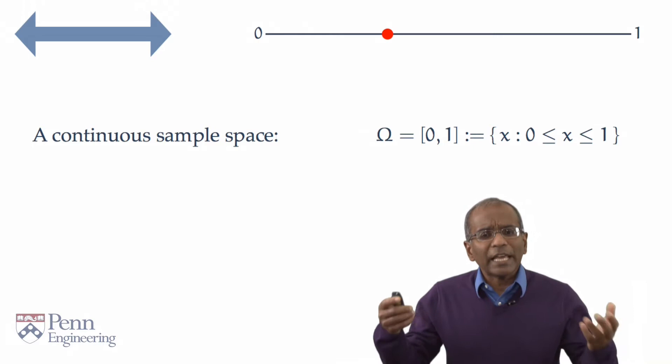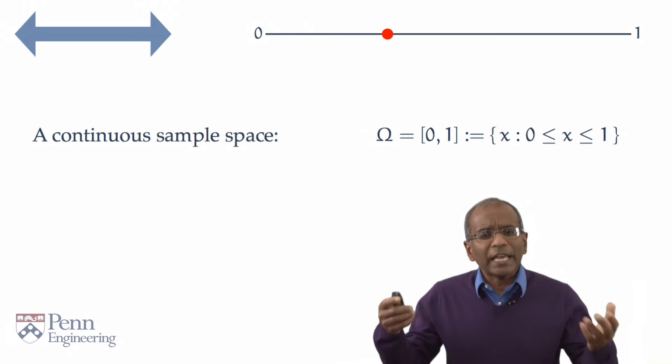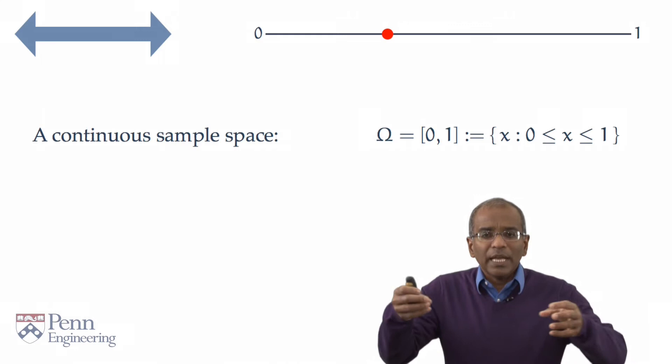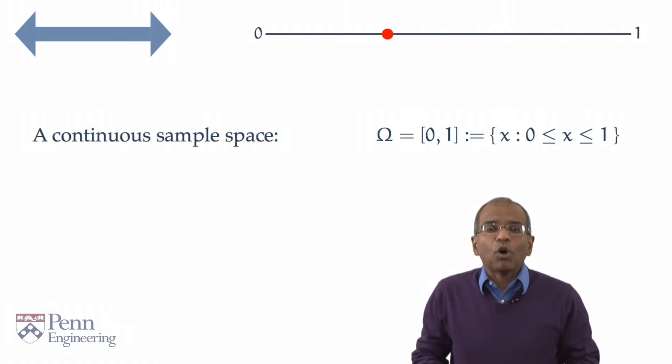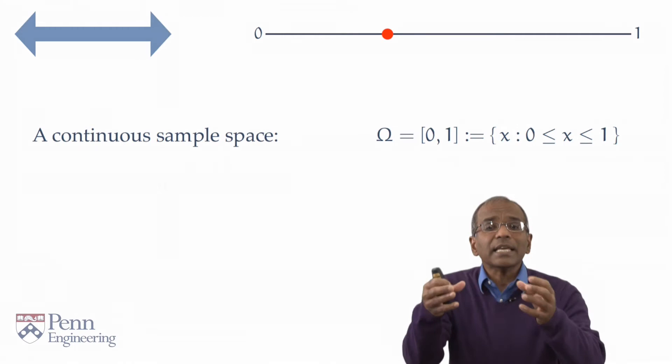What are the natural events in such a setting? The moment one has a continuum to deal with, individual points start losing their significance. There are just too many of them. But what is natural and appropriate here is that the basic events are intervals of interest. For example, the interval from a to b. And naturally now, we want to ascribe probabilities to these events and to more general events. And how do we assign probabilities?